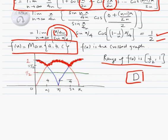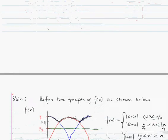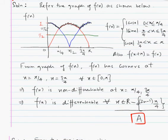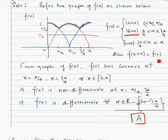Looking at the second part of this passage-type question, we have already drawn the graph of f(x) and can write it in compound form. From 0 to π by 4, the definition is mod cos x. From π by 4 to 3π by 4, the definition is mod sin x. From 3π by 4 to π, the definition is again mod cos x. This is the compound form of f(x).